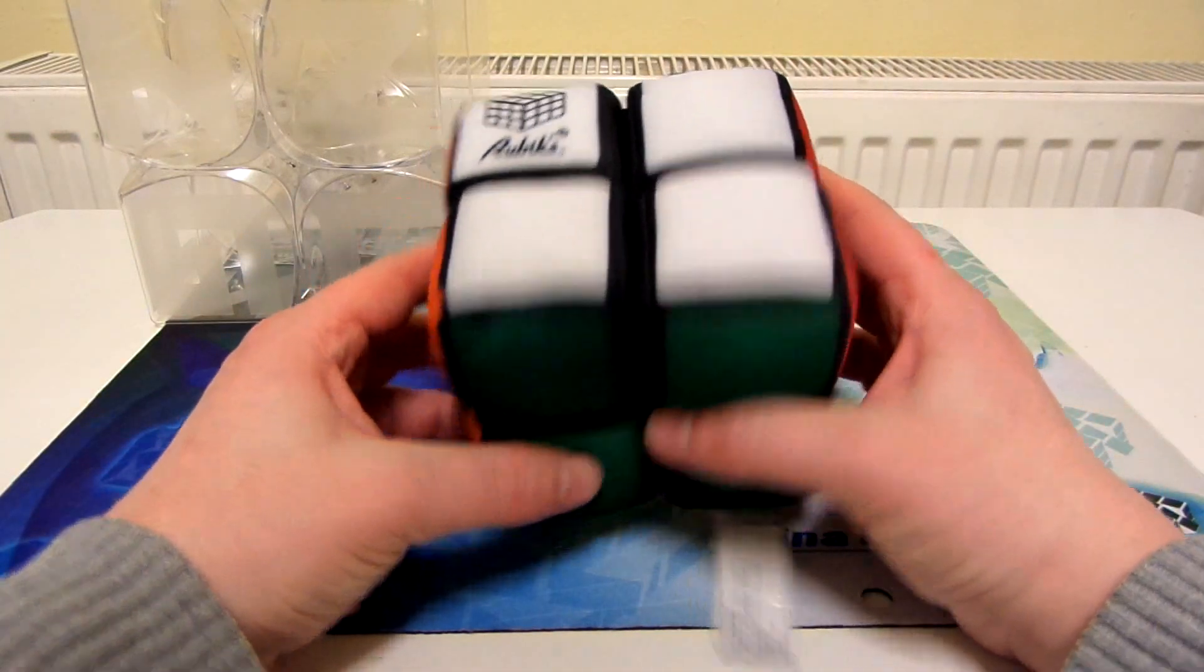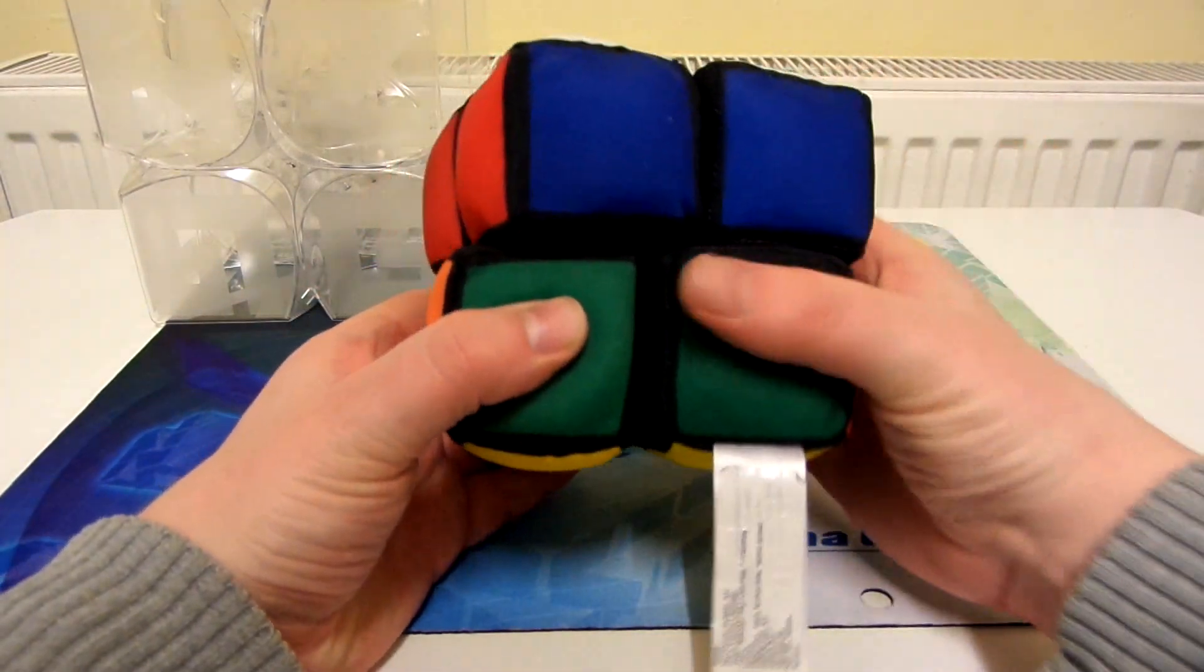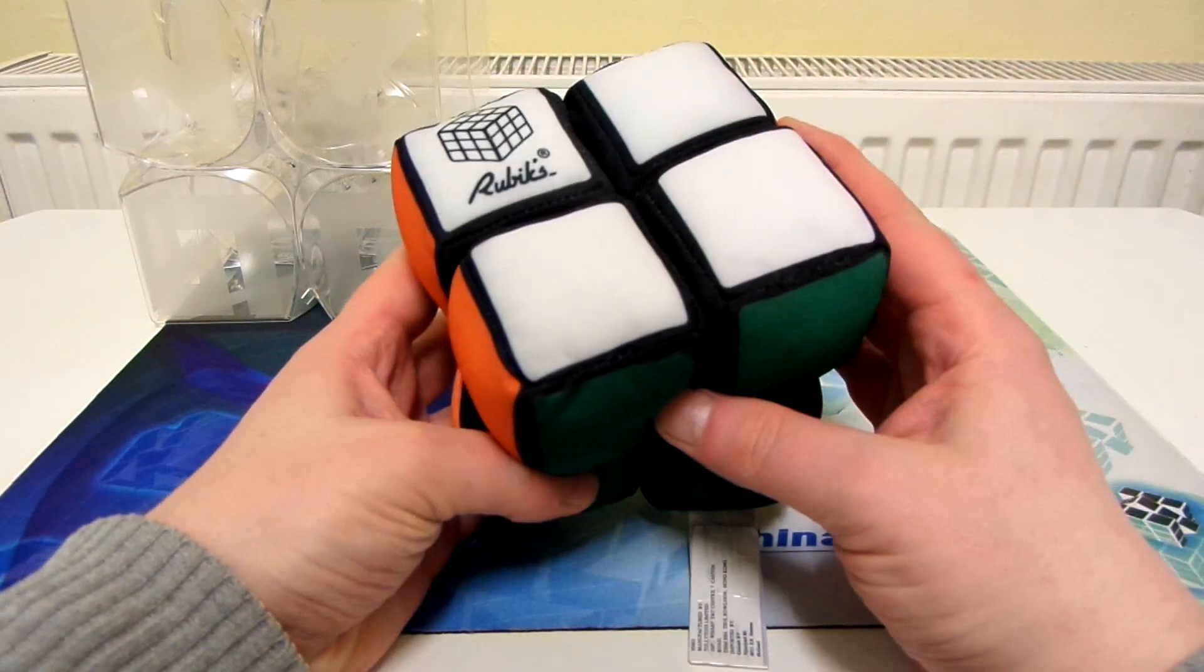Next is the Rubik's plush 2x2. It's just, you know, it turns really badly, but it's a fun novelty cube.